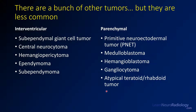There are many other brain tumors we won't cover in detail here. These include intraventricular tumors such as subependymal giant cell tumors seen in tuberous sclerosis, central neurocytoma, ependymomas, and subependymomas. PNET is a small blue cell tumor found in the brain parenchyma. Medulloblastomas and hemangioblastomas are common posterior fossa tumors. Gangliocytomas are rare cortical tumors, and ATRTs are also aggressive posterior fossa tumors. These are much less common than the ones we've already discussed.